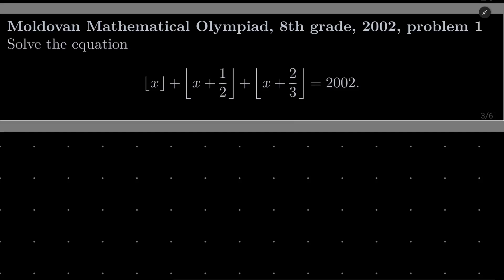Hello friends, in this video I'd like to solve the following problem from the Moldovan Mathematical Olympiad for 8th graders, 2002, problem number 1. We wish to solve the following equation: floor of x plus floor of x plus 1/2 plus floor of x plus 2/3 equals 2002.